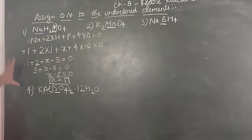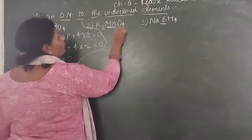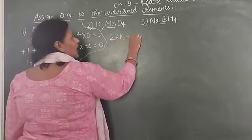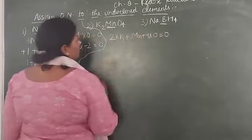I think all of you understood. Next we will do K2MnO4. Same method: 2 into K plus Mn plus 4 into O equals 0.